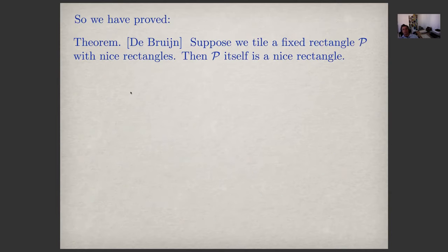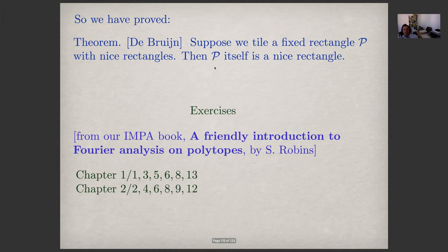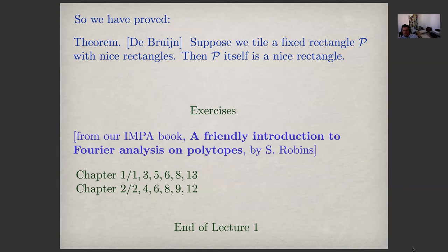So we've proved de Bruijn's theorem. The exercises for today are from my book, A Friendly Introduction to Fourier Analysis on Polytopes, published by IMPA. I encourage you to do the exercises from chapters one and two. One has to practice to get better. That's the end of lecture one — please stay tuned for the next lecture. Thank you for your attention and interest. Ciao.